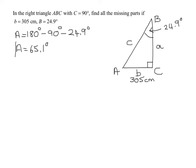So I've found angle A. Now we have to find side C and side A. It doesn't matter which one we find first. I cannot use the Pythagorean theorem because to use the Pythagorean theorem you need to know two sides. I only know one side, so what I'm going to have to do is set up a trig function.